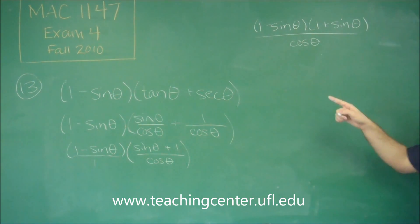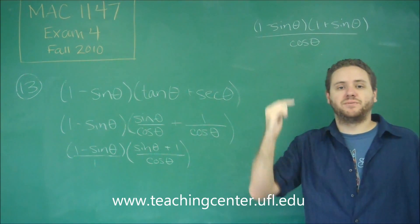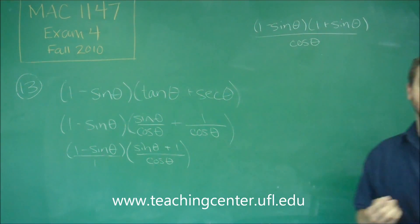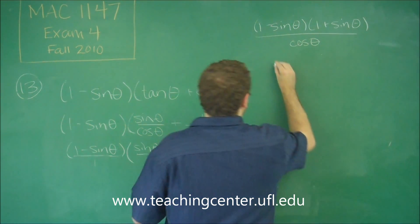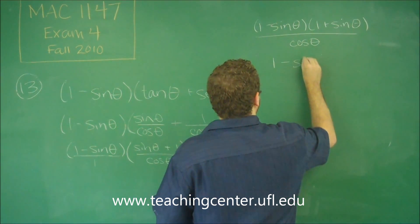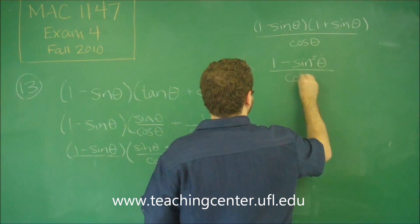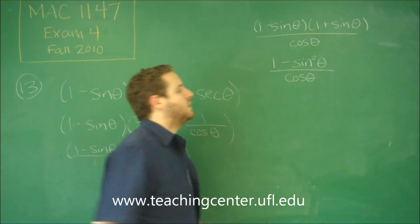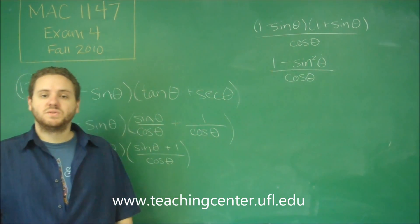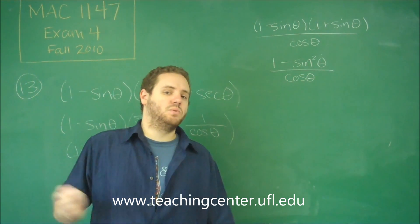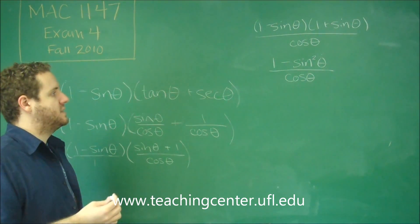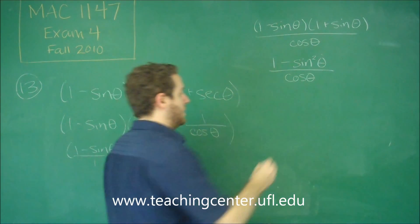So you can see from here, 1 minus sine theta, 1 plus sine theta is a factored form of a difference of two squares, which means that actually is 1 minus sine squared theta. And 1 minus sine squared theta comes from your Pythagorean identity. Sine squared plus cosine squared equals 1. So 1 minus sine squared is just cosine squared.